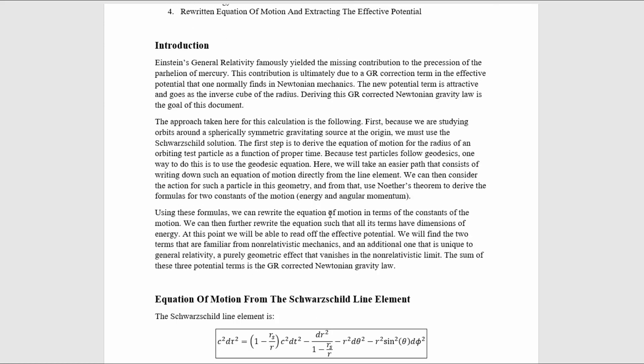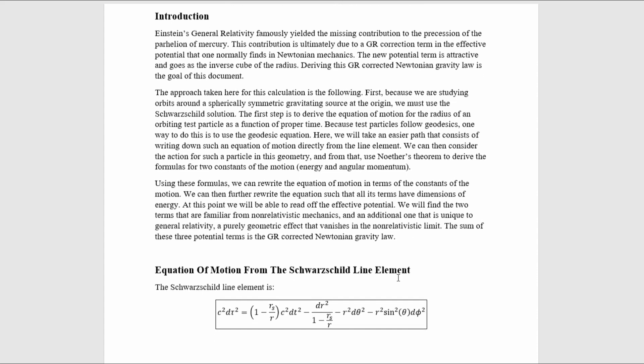Using these formulas, we can rewrite the equations of motion in terms of the constants of the motion. We can then further rewrite the equation such that all its terms have dimensions of energy. At this point, we will be able to read off the effective potential. We will find the two terms that are familiar from non-relativistic mechanics and an additional one that is unique to general relativity, a purely geometric effect that vanishes in the non-relativistic limit.